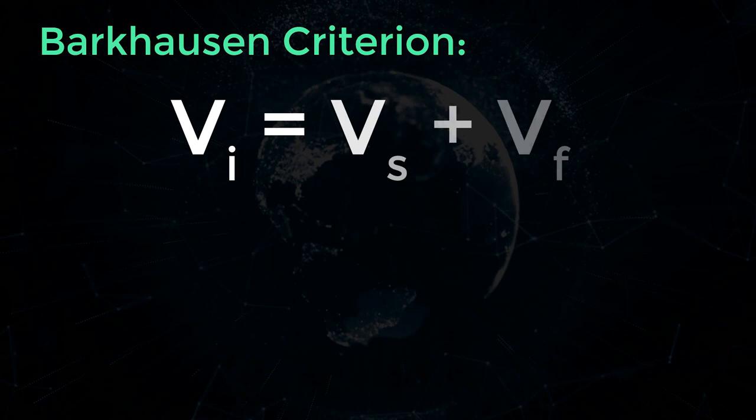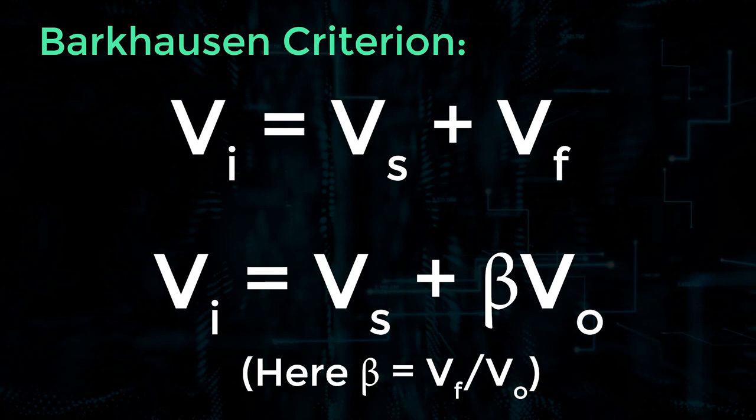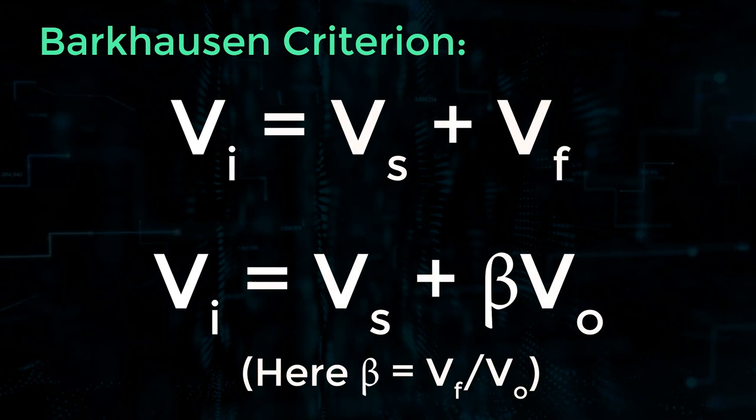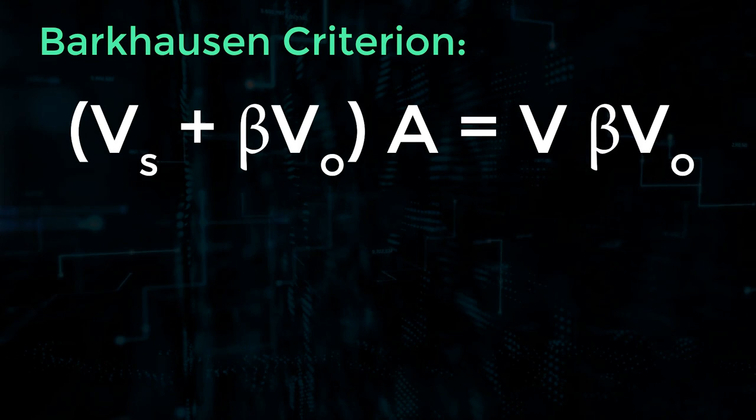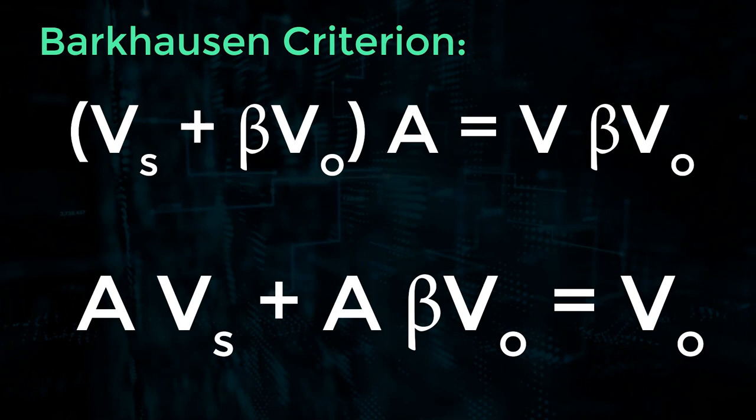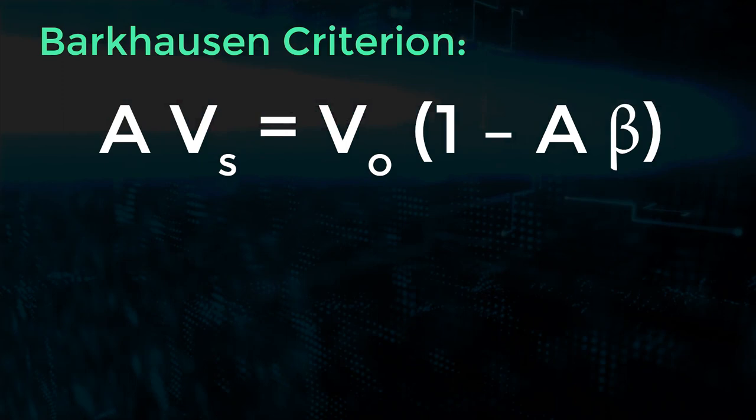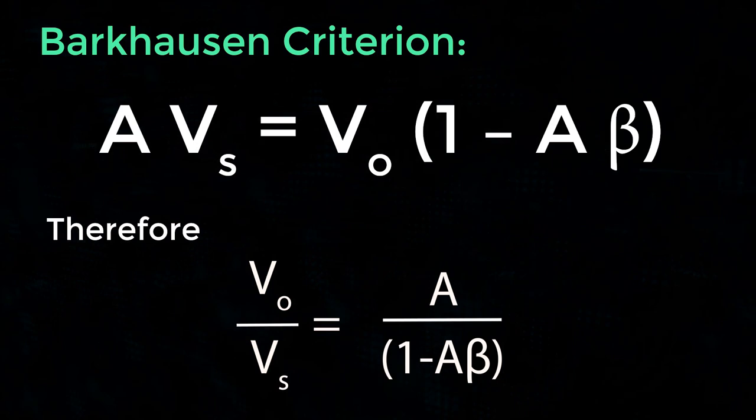Barkhausen Criterion: Vi equals Vs plus Vf. Vi equals Vs plus beta Vo. Here beta equals Vf by Vo. Vs plus beta Vo into A equals Vo. A into Vs plus A into beta Vo equals Vo. A into Vs equals Vo into 1 minus A into beta. Therefore, Vo by Vs equals A by 1 minus A beta.